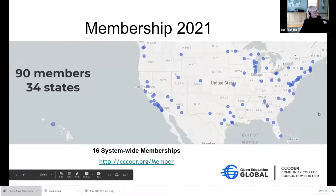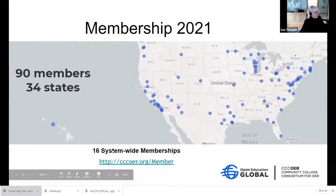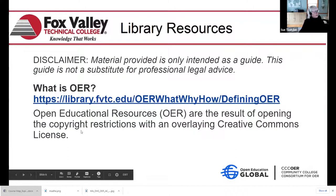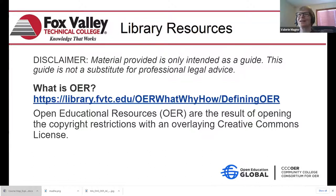Here's a quick view of our membership. We have 90 members in 34 states, dispersed across the country, and we have 16 system-wide memberships. And now I'm going to turn it over to Val for her OER basics introduction.